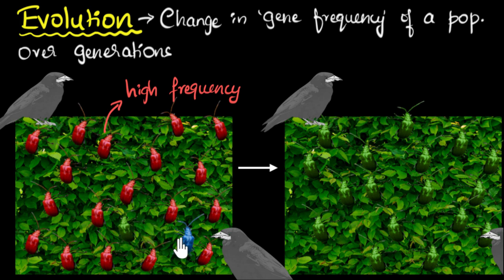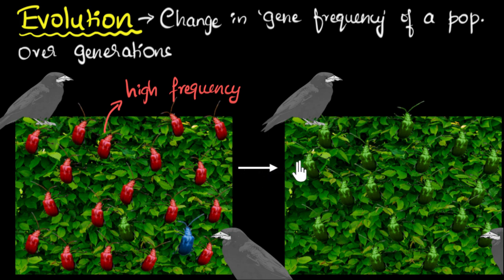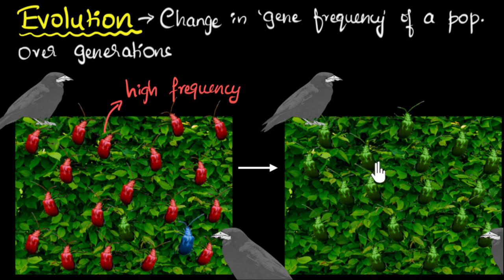As years pass — and this can take many years; the amount of time depends on a lot of factors, it can take a few years or it can take hundreds of years — after many generations, we now see that it's the green colored beetles that have become the majority, which means the genes responsible for green color are now more frequently seen and more frequently being passed along.